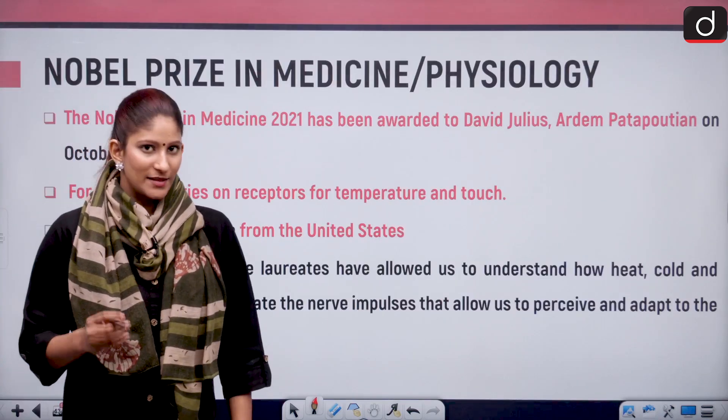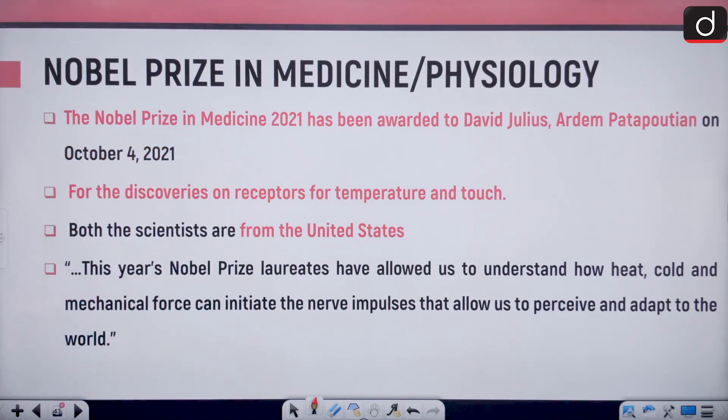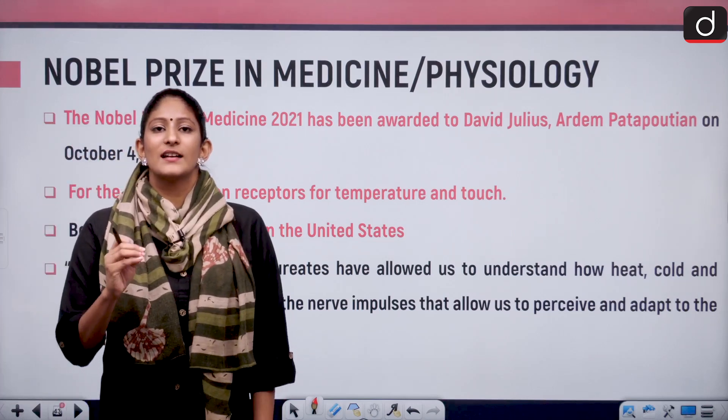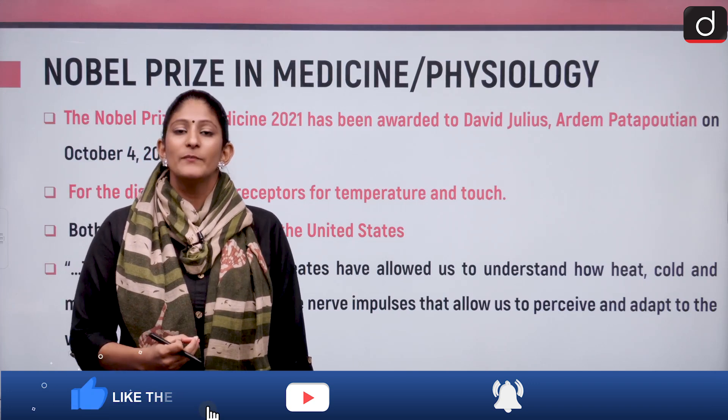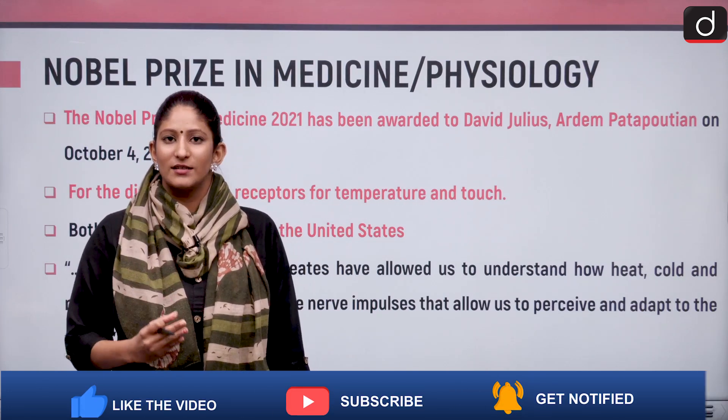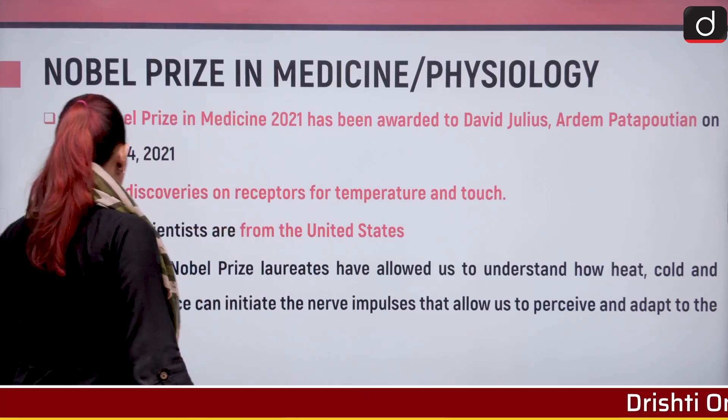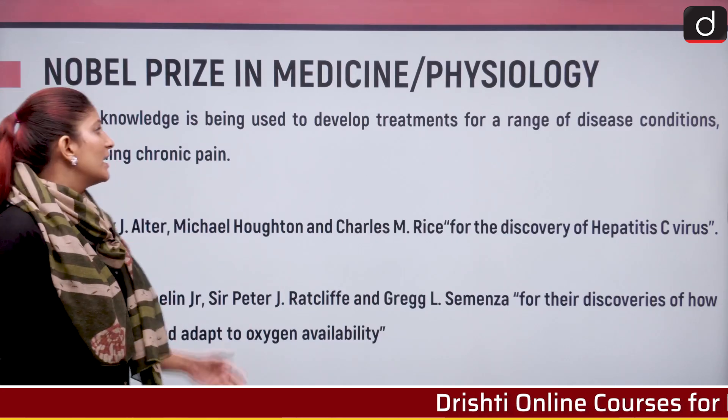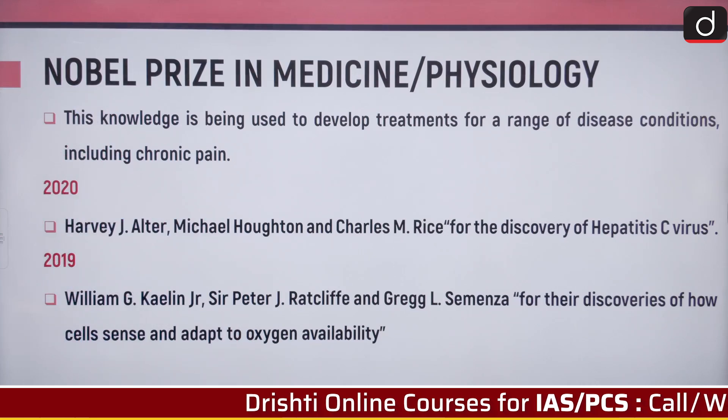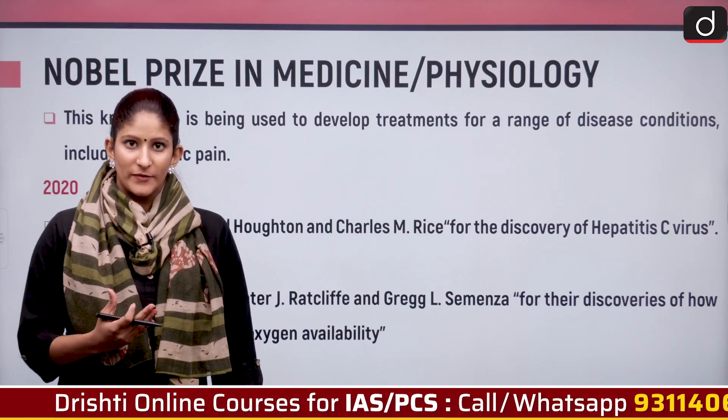Nobel Prize in Medicine 2021 has been awarded to David Julius and Adam Patapoutian on October 4th, 2021 for the discoveries on receptors for temperature and touch. Both scientists are from the United States. This year's Nobel Prize laureates have allowed us to understand how heat, cold and mechanical force can initiate nerve impulses that allow us to perceive and adapt to the world. In simple terms, how special sensory cells are responsible for turning mechanical energy into electrical energy for our brains to interpret and how we adapt to the environment. This knowledge will be used to develop treatments for a range of disease conditions including chronic pain.